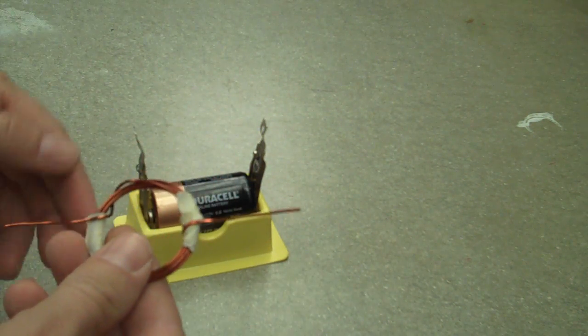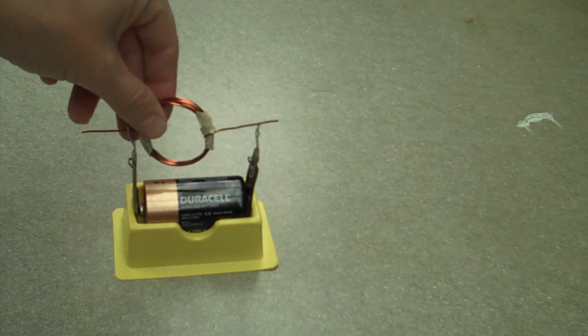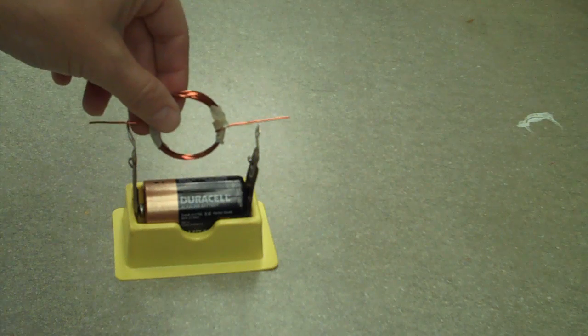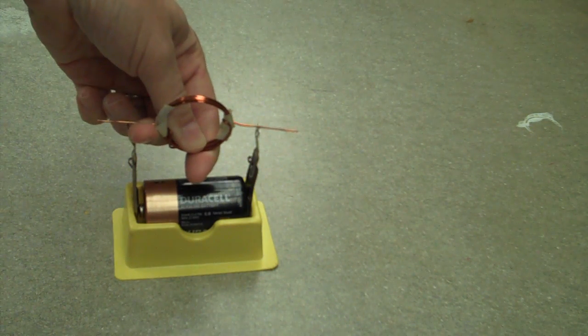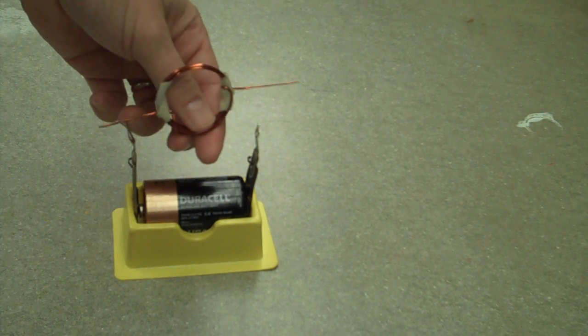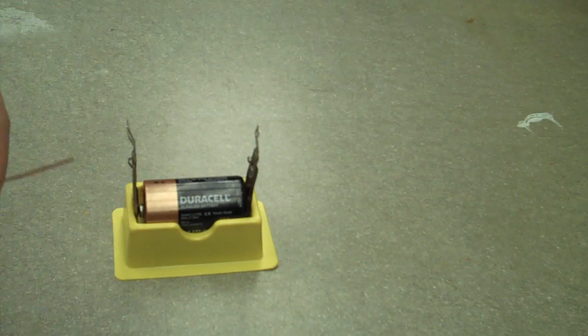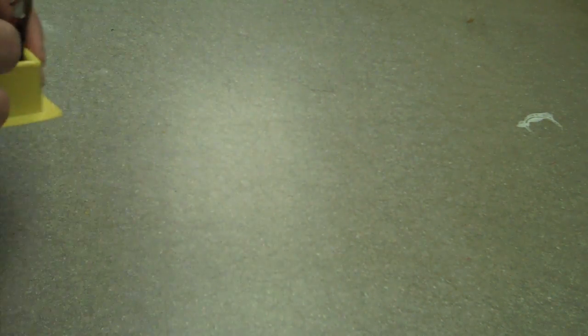Well, there's one more thing. You have to have some way of switching the current. In this case, when it's like in this position, there's current through it. It interacts with the magnet and rotates. When it gets this, the enamel is sitting on that holder and there's no more current going through it. So it just keeps on rotating because of its angular momentum until it gets back around and gets another boost. So that's a very simple magnet and a wire making a motor.